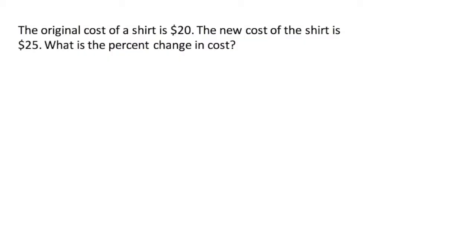So our example states that the original cost of a shirt is $20. The new cost of the shirt is $25. So what is the percent change in the cost? Well, we know we have to use new minus old over old to find our answer. So the new cost is $25 minus the original 20 divided by 20. This equals 5 over 20. Now to change this into a percentage, we simply want to make it out of 100.